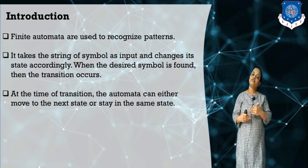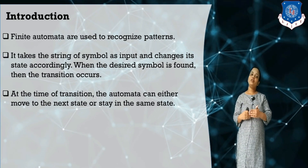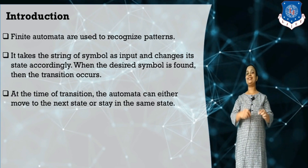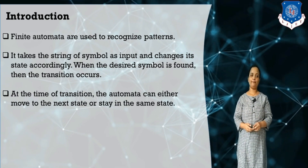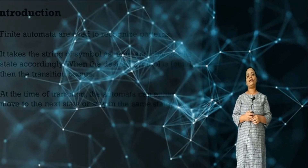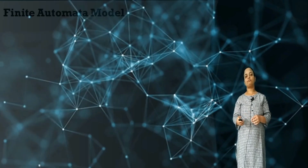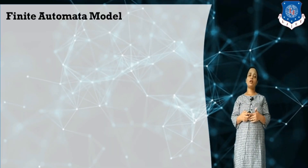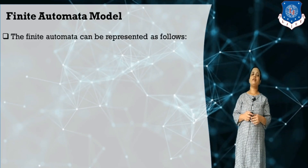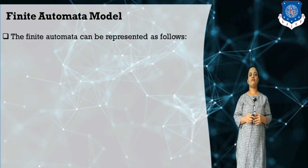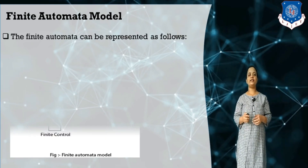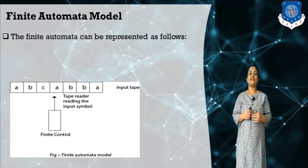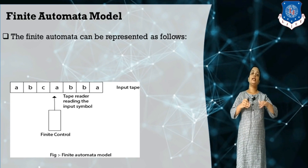If a particular pattern is found in the set of strings, it means that the string is accepted by the finite automata. This finite automata is generally represented by two things: the finite control, which contains the set of states, and the input tape.